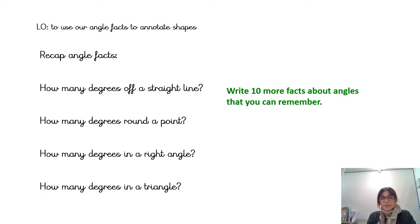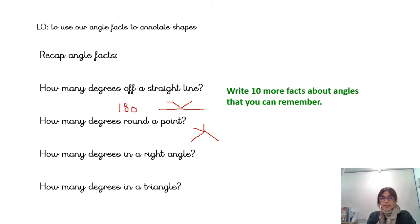Let's see what we have. How many degrees off a straight line? All the angles off a straight line would be 180 degrees — so all these angles would add up to 180 degrees. How many degrees around a point? All these angles coming off a point would add up to 360 degrees. Angles off a straight line: 180 degrees — give yourself a tick. Angles around a point: 360 degrees — give yourself a tick.